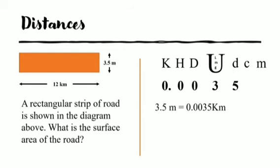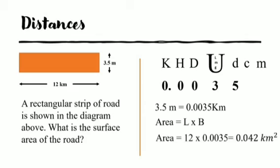Now that we have done the conversion, we can find the area of the strip of road. Area of a rectangle is length times breadth. And so therefore, the length which is 12 kilometers and the breadth which is equivalent to 0.0035 kilometers would be substituted with L and B respectively. So the area is equal to 12 times 0.0035, which is equivalent to 0.042 square kilometers. Therefore, the surface area of the road is 0.042 square kilometers. Keep in mind that area is always given in square units.